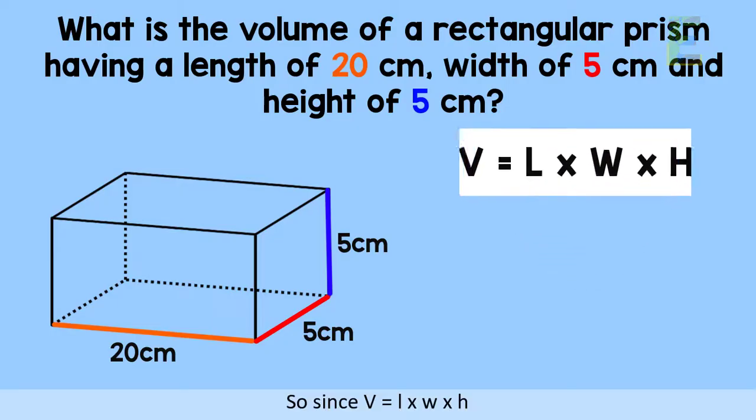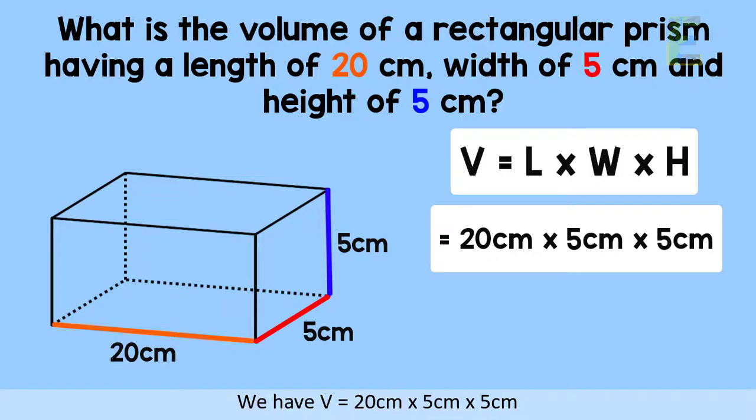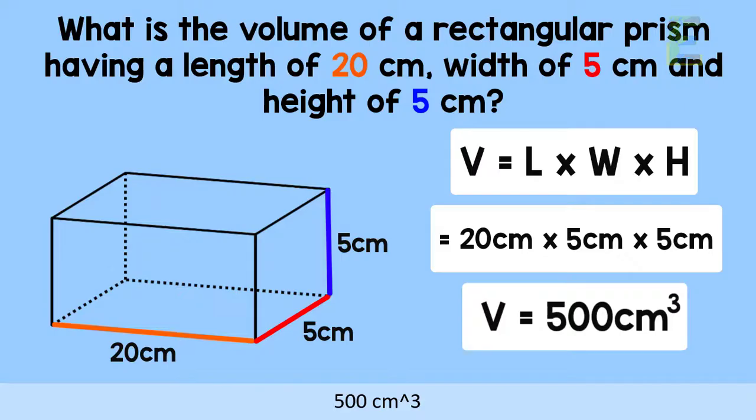So since V equals L times W times H, we have V equals 20 centimeters times 5 centimeters times 5 centimeters, in which we will have the final answer of 500 cubic centimeters.